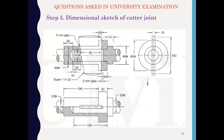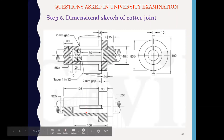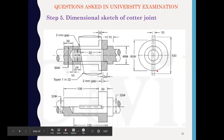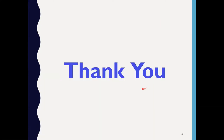After finding the various dimensions of the cotter, spigot, and socket, in the final step we draw the three views of the cotter joint: the sectional front view, the top view, and the side view of the cotter joint. In this way we have designed the cotter joint. Thank you.